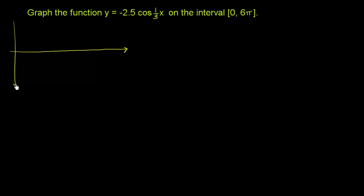This is my y-axis. I want to have some space so I can eventually graph this entire thing. Let's say this is negative 1, negative 2, positive 1, and positive 2. This right over here is 2 pi, and that would be pi right over there.